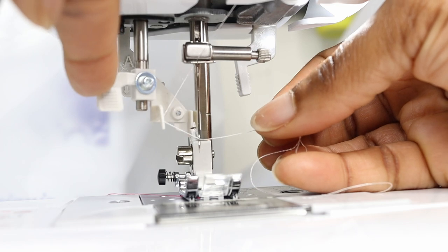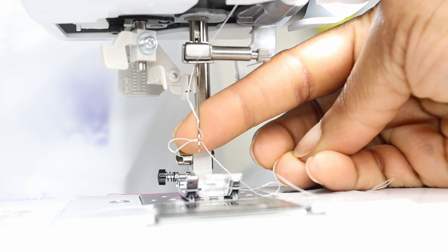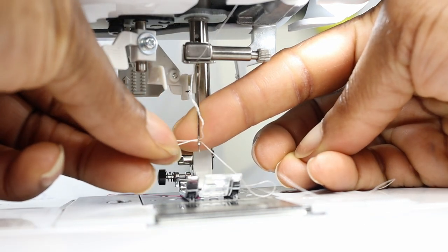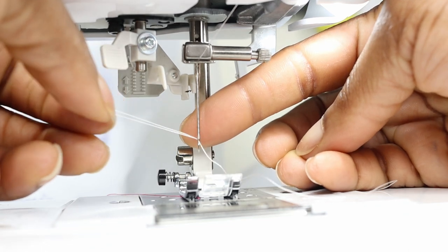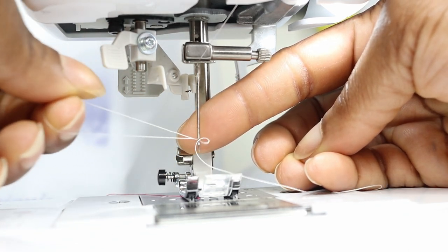Then I'm going to slowly release the threader so that it doesn't unthread. Here I'm showing you the loop that has been created, and then you just reach to the back and slowly pull the thread through to finish the threading.